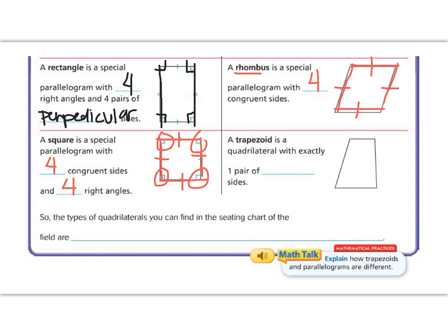And our last type of quadrilateral is a trapezoid. A trapezoid has exactly one pair of parallel sides. These two here are not congruent. They're not equal. But they are parallel.